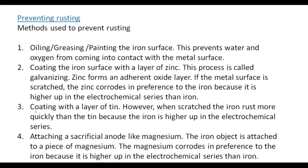We can also coat the iron with a layer of tin, like in tin cans. However, when scratched the iron rusts more quickly than the tin because iron is higher up in the electrochemical series than tin. This is different from galvanizing with zinc, where zinc forms an adherent layer and if the metal surface is scratched, the zinc erodes in preference to the iron.